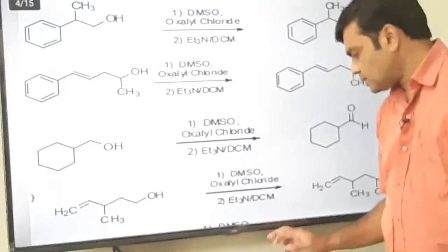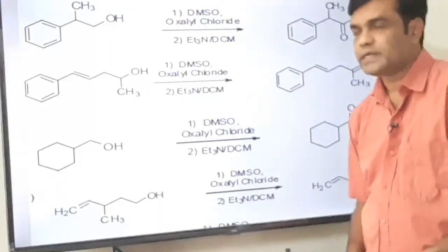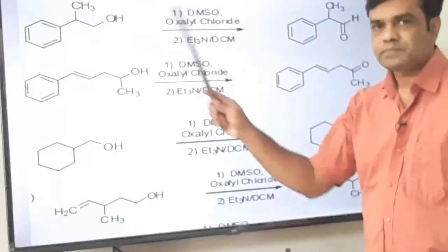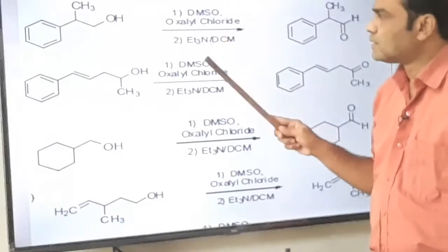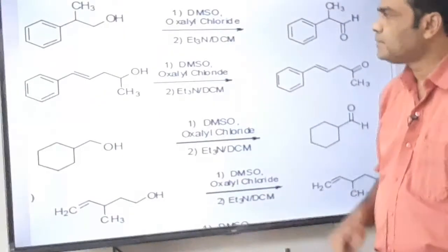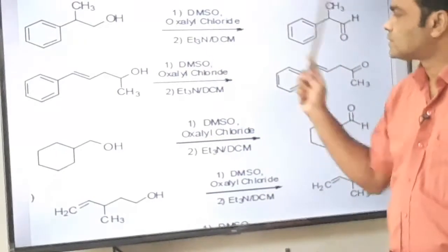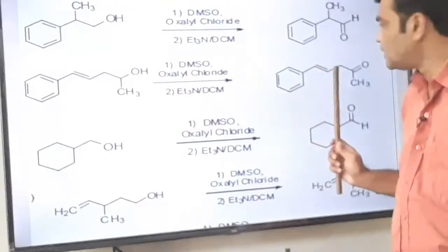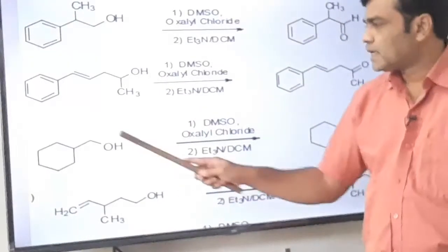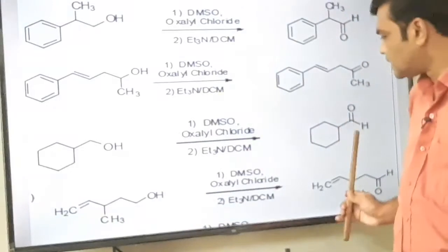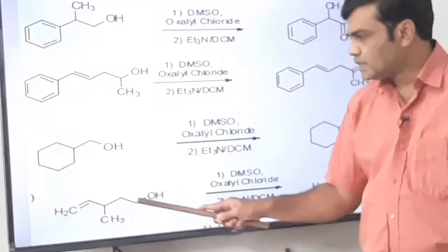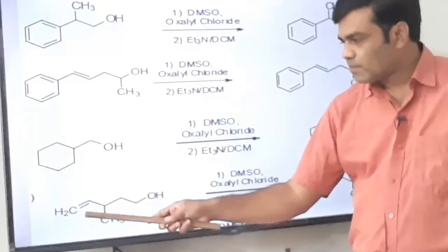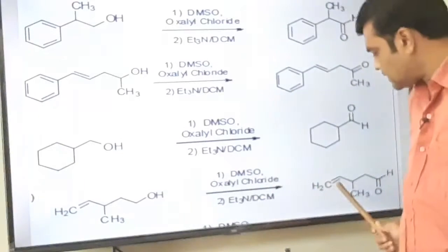Some applications are mentioned here. This CH2OH group is a primary alcoholic group; on treatment with DMSO, oxalyl chloride, and triethylamine, the primary alcohol is oxidized to aldehyde. Here it is secondary alcohol, which is oxidized to ketone. Here and here, primary alcohol is oxidized to aldehyde. The beauty of this reagent is that the carbon-carbon double bond is not affected — it remains as it is.